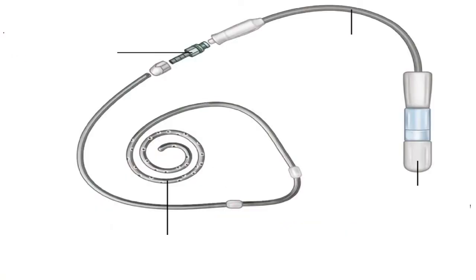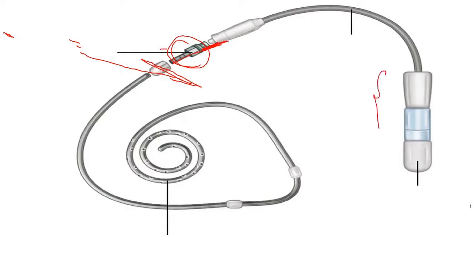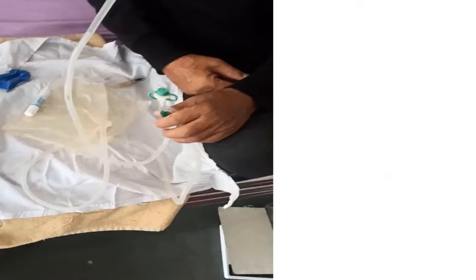This image shows the entire system: the PD catheter, the titanium adapter connecting the catheter to the transfer set, the twist clamp, and the mini cap — all of which have already been described.